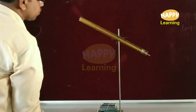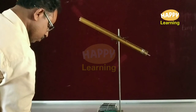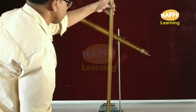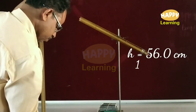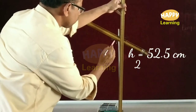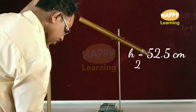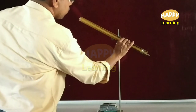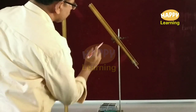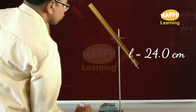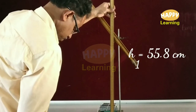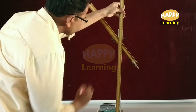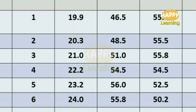Now the position of the quill tube is slightly changed as shown here. The length of the air column is noted as L. The height of the mercury pellet from the experimental table is noted as h1, and the other end — that is the open end side — is noted as h2. These values of L, h1, and h2 are noted in the table. The position is slightly changed and rotated again. The length of the air column is noted as L. The height of the mercury pellet towards the closed end is noted as h1, and towards the open end is noted as h2. The values are written in the table.